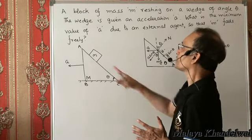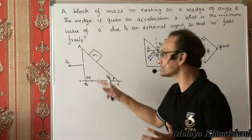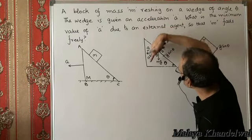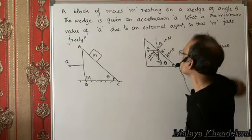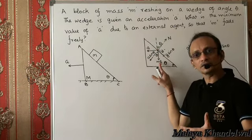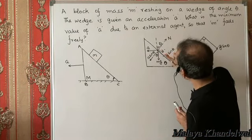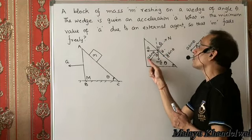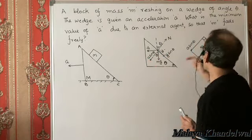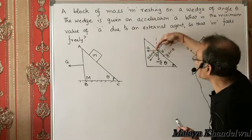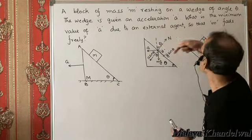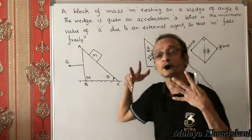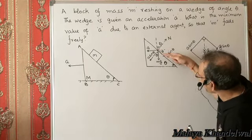We find a value of a for which the net acceleration of m is g downwards. The inclined plane has acceleration a to the left, whose component along the common normal direction is a·sinθ. This block of mass m has acceleration g·sinθ parallel to the plane, and perpendicular to the plane it must share a common acceleration a·sinθ with the wedge — that is the wedge constraint.